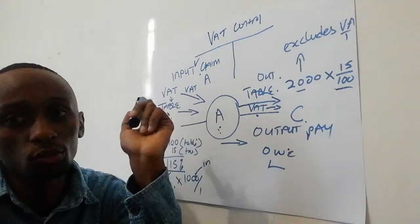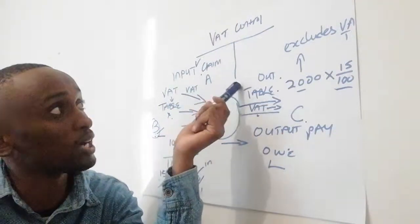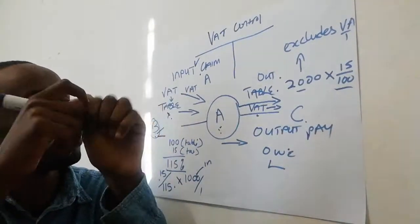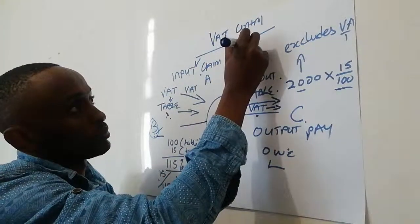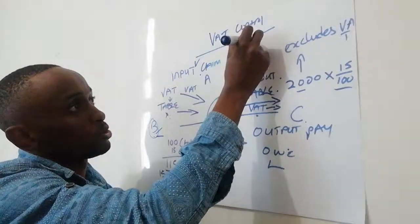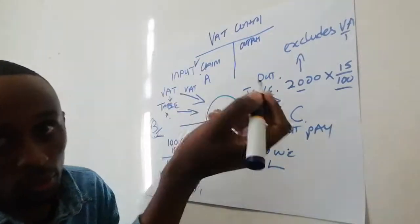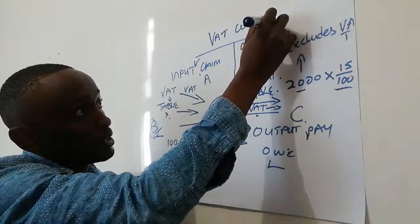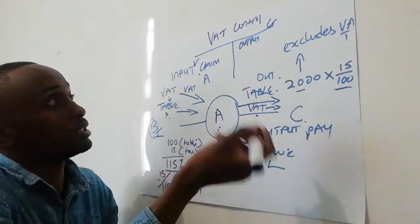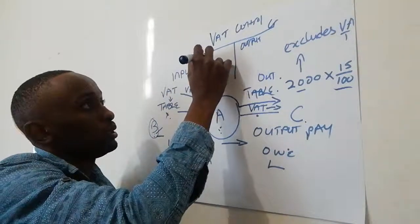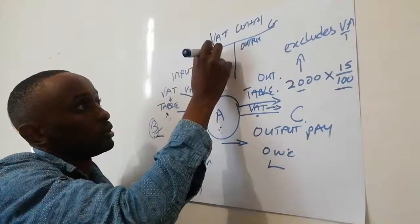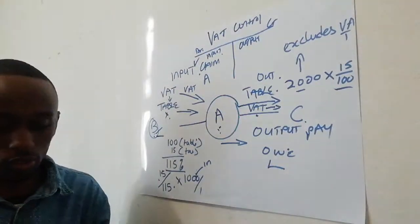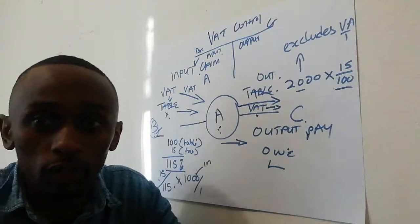And on VAT movement - this becomes a control account that we're talking about. When you owe output VAT, your liability increases on the credit side. The output VAT is going to affect this credit side, and your input VAT is going to be affecting your debit side.